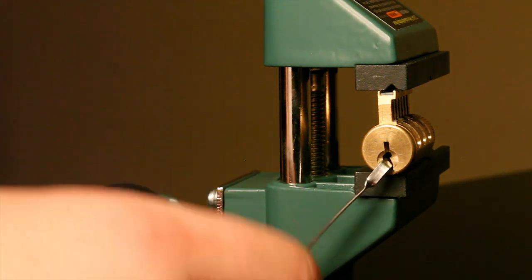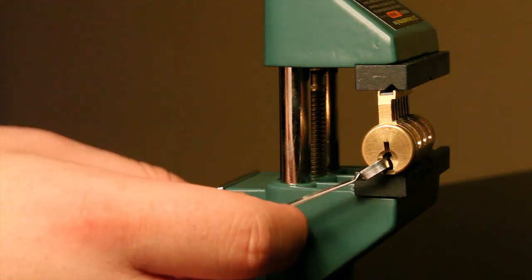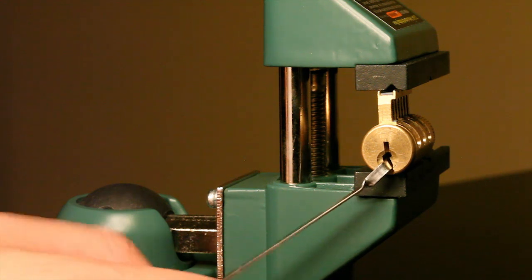Bottom tension is really easy to apply and pretty convenient. You'll be able to find a spot in most locks for bottom tension.